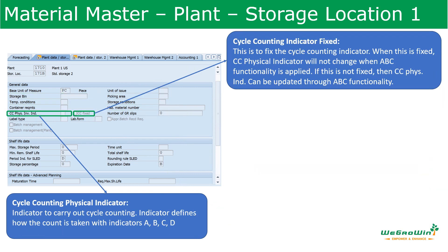Cycle Counting Physical Indicator and Cycle Counting Indicator Fixed are parameters that ensure a material comes under the cycle counting process. The cycle counting physical indicator can be set as A, B, C, or D. The fixed indicator means that when it is fixed, this indicator will not change when you are updating the A, B, C classification. If it is not fixed, then during physical inventory processing, this can be updated through the A, B, C functionality.